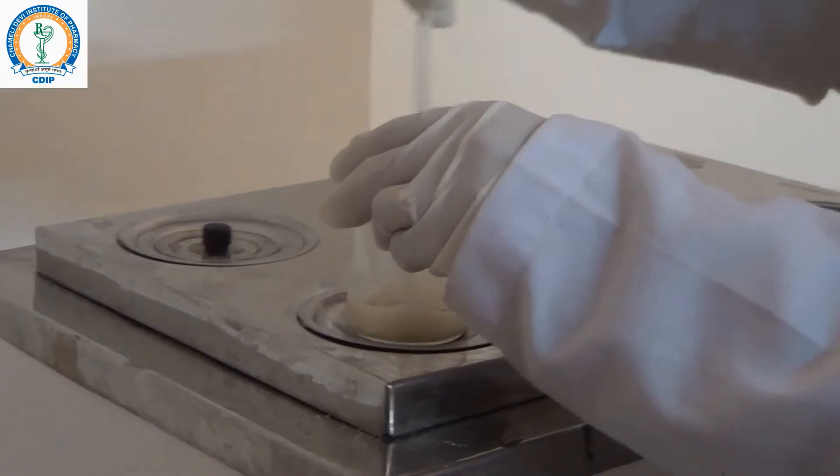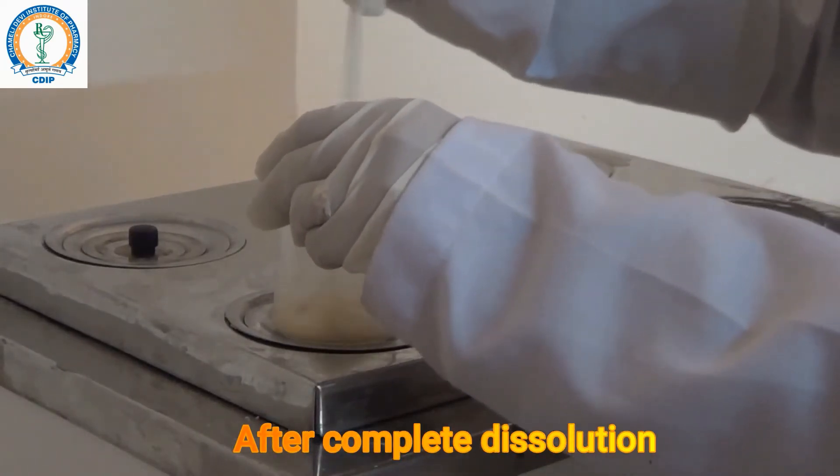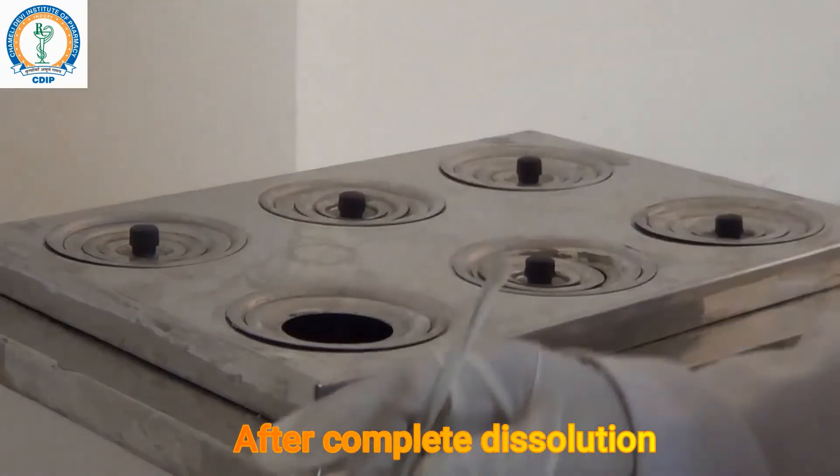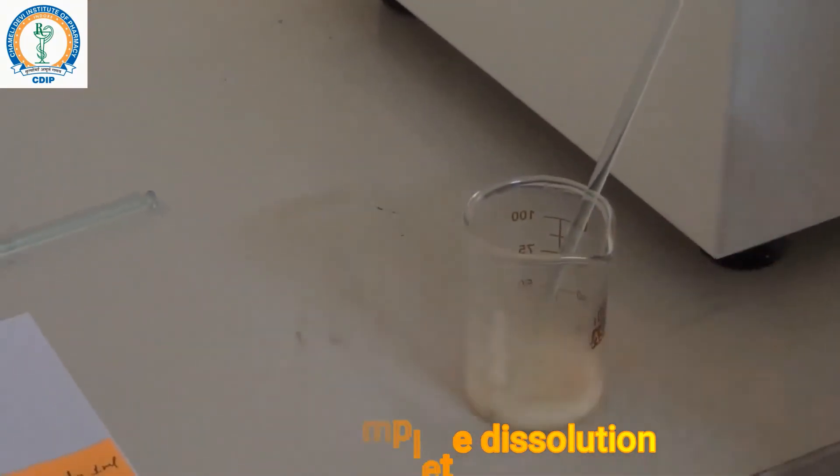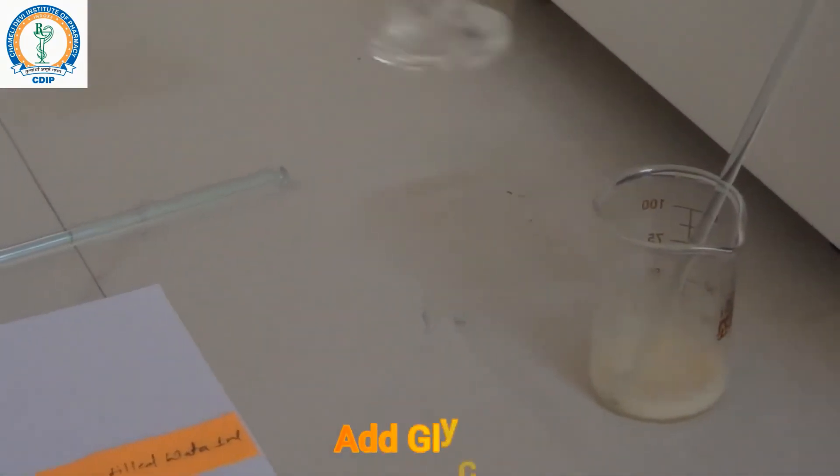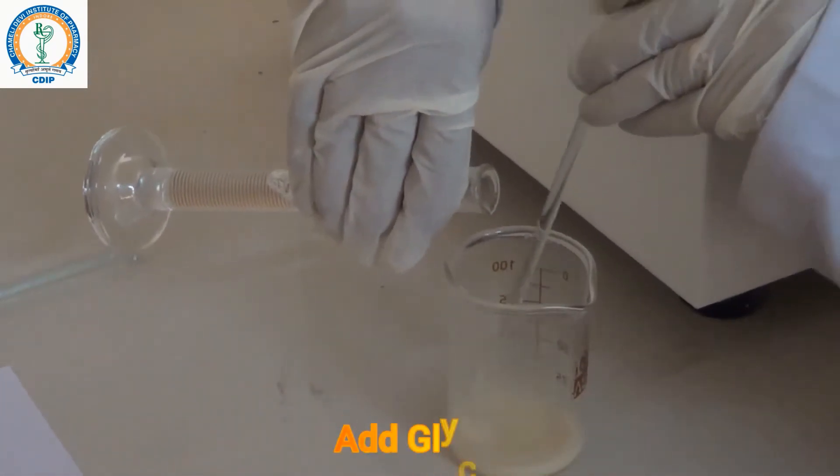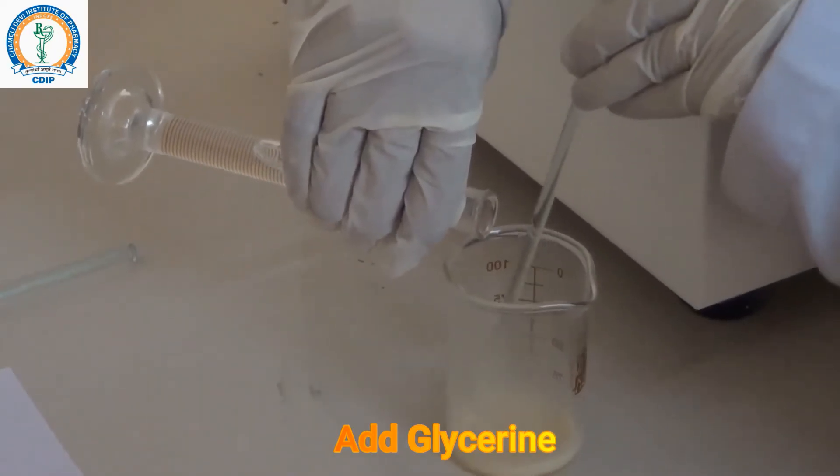Now after the gelatin is completely dissolved, remove it from the water bath and add 7 grams of glycerin solution slowly with continuous stirring.